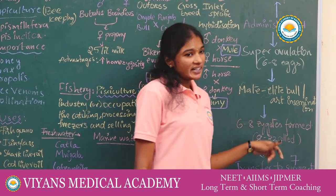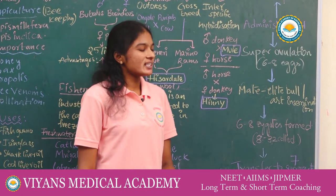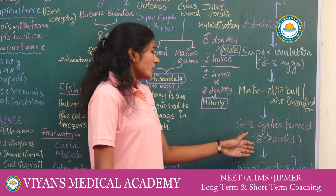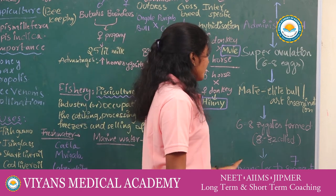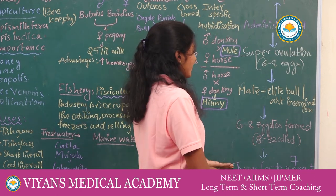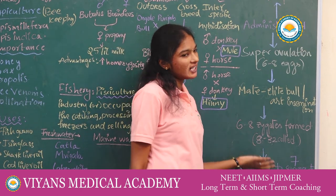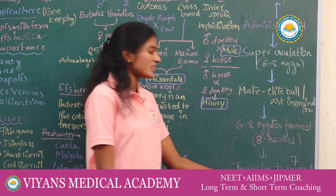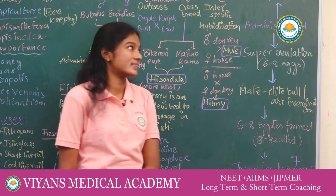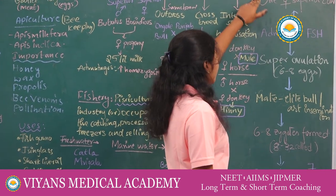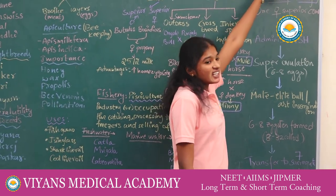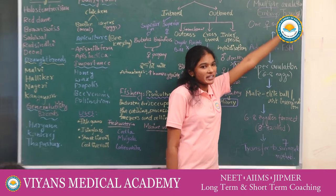These zygotes, at the eight to thirty-two cell stage, can be recovered non-surgically and transferred into surrogate mothers. The use of MOET is to increase herd size in a short time.